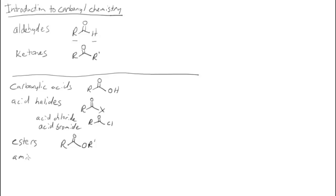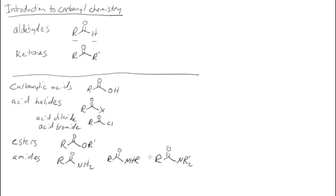We can have amides. In amides, we have an R group on one side of the carbonyl and an amine group on the other. The amine group can be NH₂, NHR prime, or NR₂ prime. We should put primes on those R's because they don't have to be the same as the R group on the other side of the carbonyl. Those are all just different forms of amides.